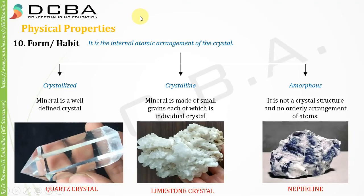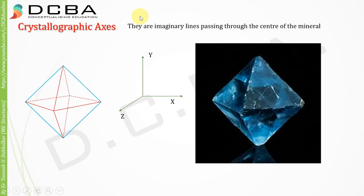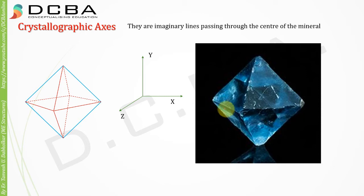Last time we stopped at physical properties of minerals. Let us move on to the next thing. After physical properties, we are going to learn about crystallographic axes. Now, what are these? They are imaginary lines passing through the center of the mineral. This is just for representation purposes.